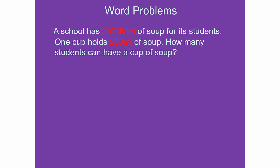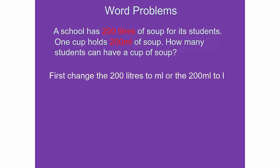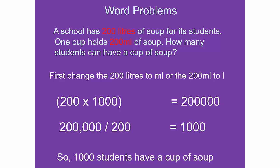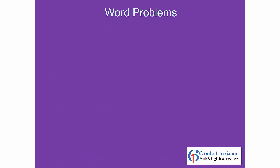The school has 200 liters of soup. One cup holds 200 ml. How many students can have a cup of soup? First, convert 200 liters to milliliters: 200 times 1,000 gives 200,000 ml. Then divide by 200, which gives you 1,000. Therefore, 1,000 students can have a cup of soup.